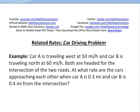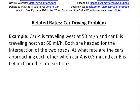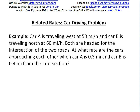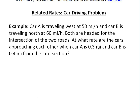Hi, it's Math Easy Solution to discuss another related rates problem. I'll look at a driving car problem. Car A is traveling west at 50 miles per hour and car B is traveling north at 60 miles per hour. Both are headed for the intersection of the two roads they're on. At what rate are the cars approaching each other when car A is 0.3 miles and car B is 0.4 miles from the intersection?